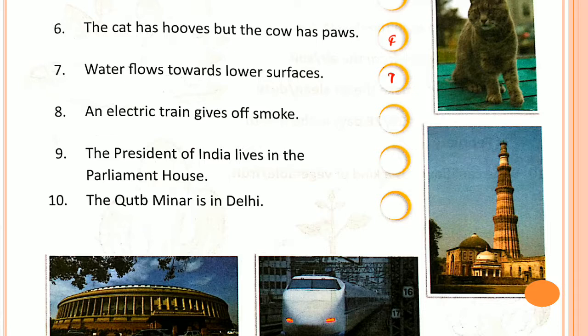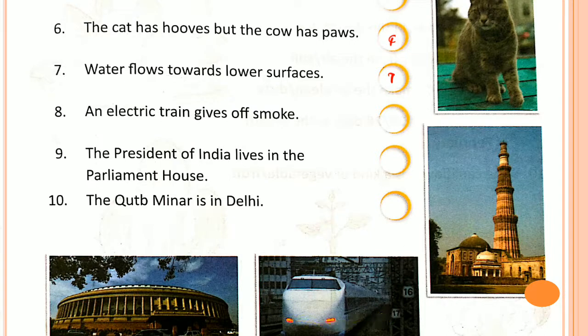Number 8: Electric trains give out smoke. Is it true or false? It is FALSE. Electric trains do not give out smoke — they run using electricity or a battery. That is why it is a false sentence.